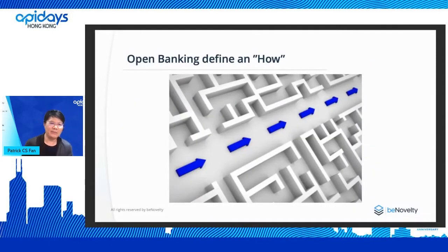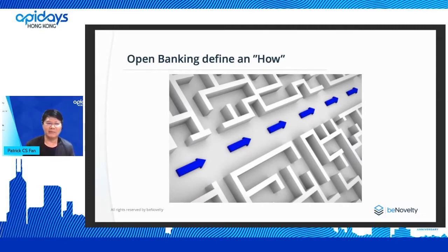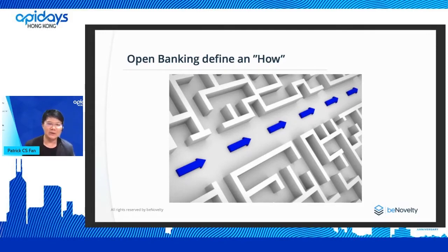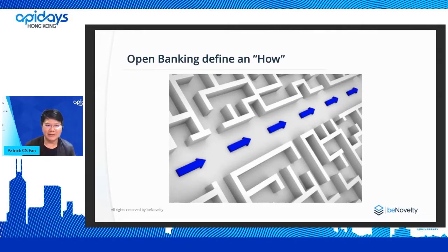Open banking actually defines the 'how' — how we need to acquire data from the bank and what kind of process to follow. For example, you may have heard about the TSP, first service party registration, and certifications. This talks about how they need to acquire data with what kind of background, and also defines what basic APIs at least need to be opened up from the bank.